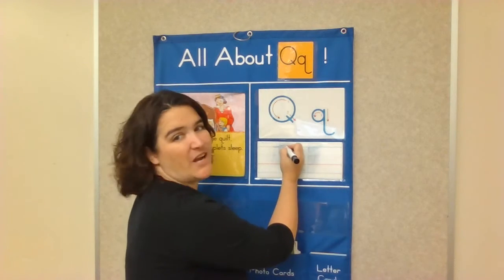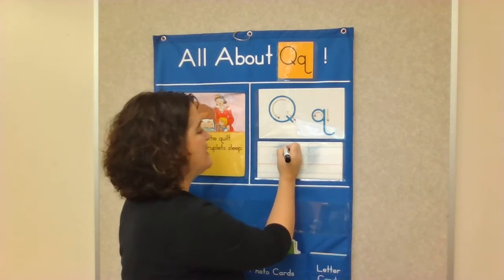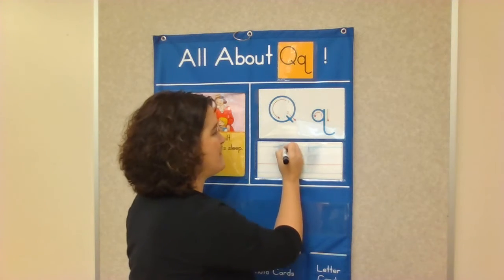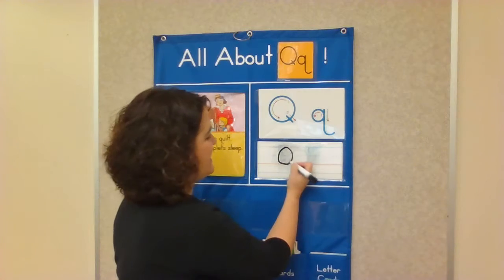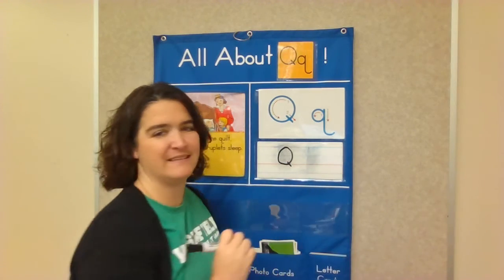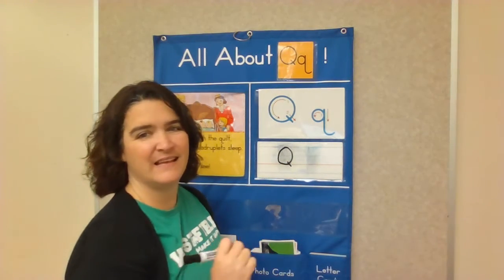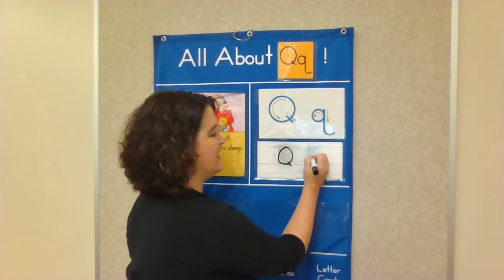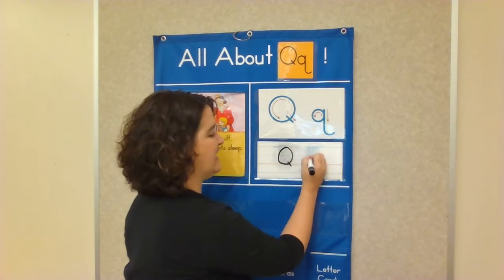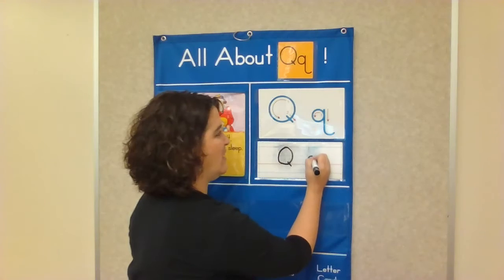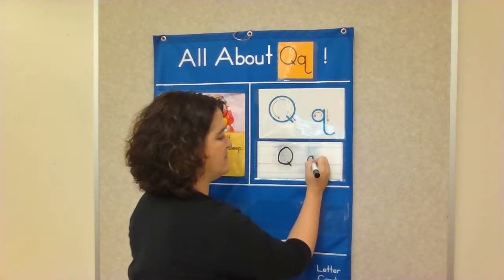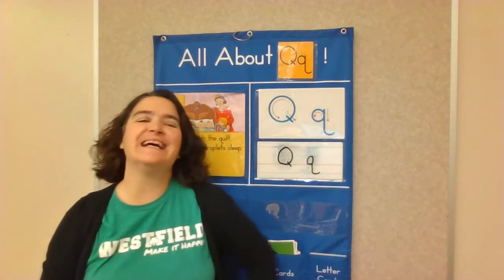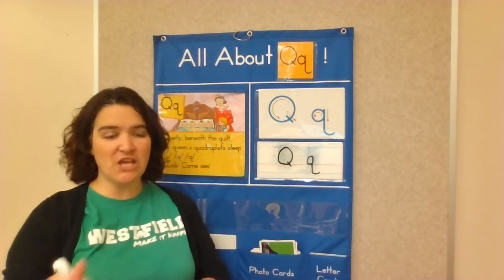We're gonna start at the top blue line, make a big curve around and back up, and then a little stick. The lowercase Q: start at the dotted line, little circle around up, back down with the tail. A quill! That's how you make the letter Q!